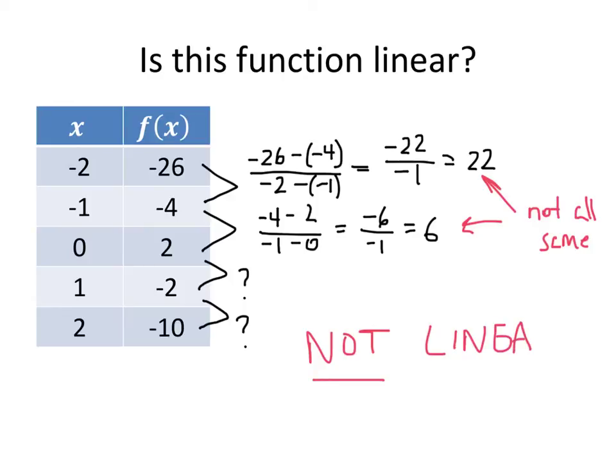So the only way to know for sure if a function is linear is to check all of the rates of change and make sure they're all the same. If some of them are the same and some are different, it's not linear. But as soon as you get an average rate of change that's different from the others, you can stop and you know your function is not linear.